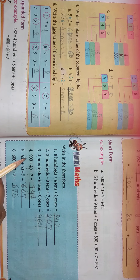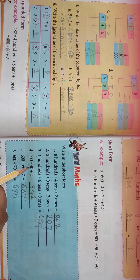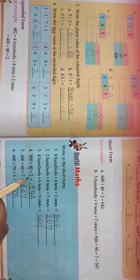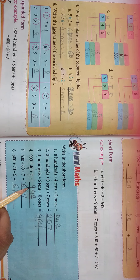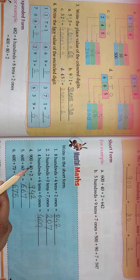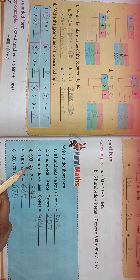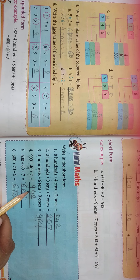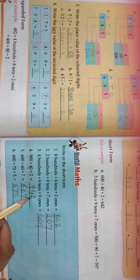Same as: 900 + 40 + 2. How many hundreds? 9. How many tens? 40 means 4 tens means 40. So you just write here 4, and 2 ones. The number is 942.